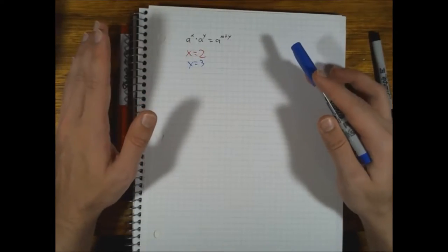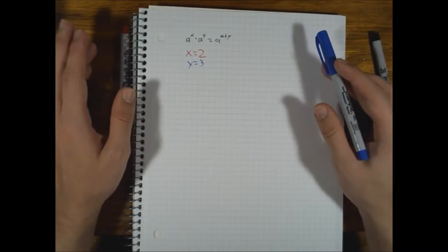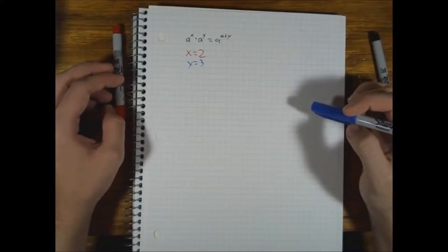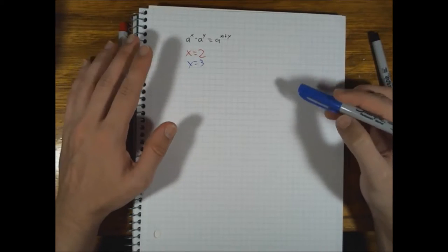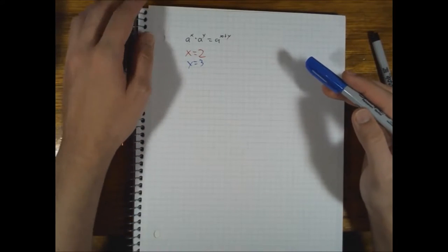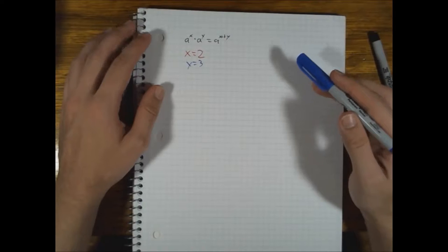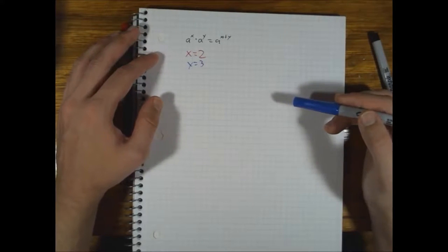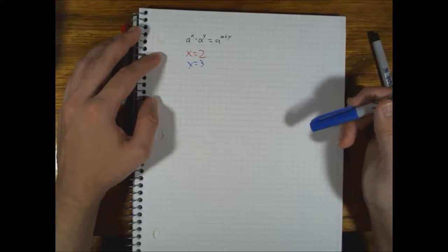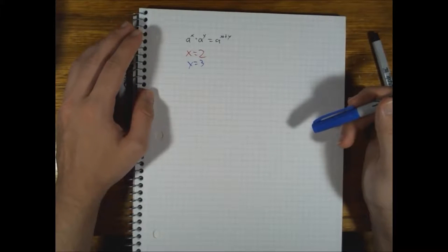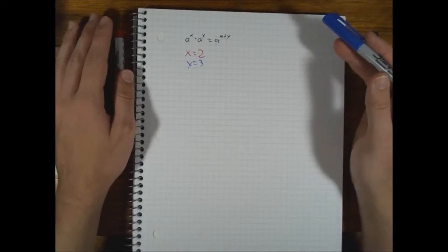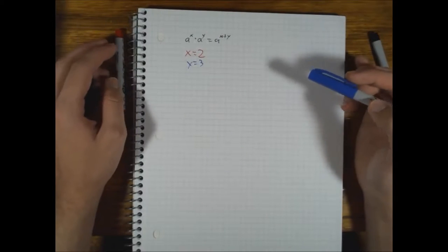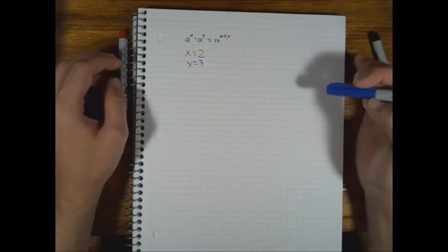So, we're just going to leave a as it is. A can be any number whatsoever. It doesn't matter if it's real, it doesn't matter if it's transcendental. Just literally any number, as long as it's a real number. I believe the rules change a little bit when you're dealing with a complex number, but we're just going to assume a is a real number. It doesn't matter if it's rational, transcendental, doesn't matter.